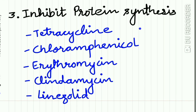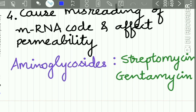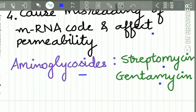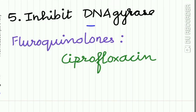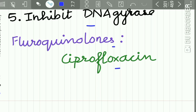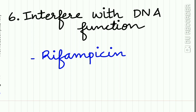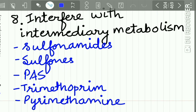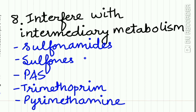Third, drugs which inhibit protein synthesis include tetracycline, chloramphenicol, erythromycin, clindamycin, and linezolid. Fourth, drugs which cause misreading of mRNA code and affect permeability include aminoglycosides like streptomycin and gentamicin. Fifth, drugs which inhibit DNA gyrase include fluoroquinolones and ciprofloxacin. Sixth, those which interfere with DNA functions include rifampicin. Seventh, drugs which interfere with DNA synthesis include aciclovir and zidovudine. Eighth, drugs which interfere with intermediary metabolism include sulfonamides, sulfones, para-aminosalicylic acid, trimethoprim, and pyrimethamine.